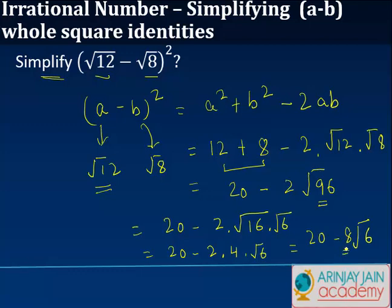We could have left it at an earlier stage, but the idea is to simplify further by checking if 96 has a factor that forms a perfect square.